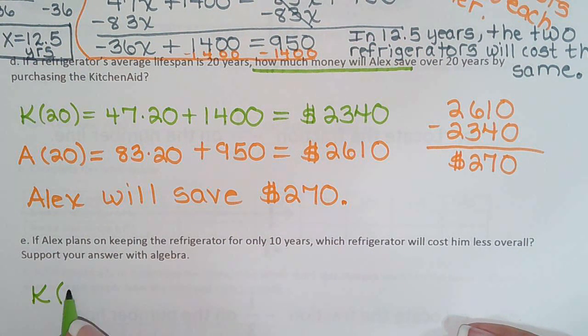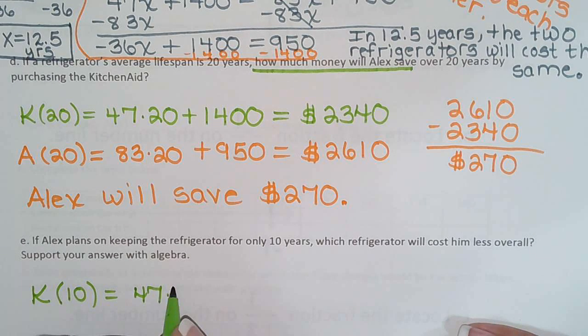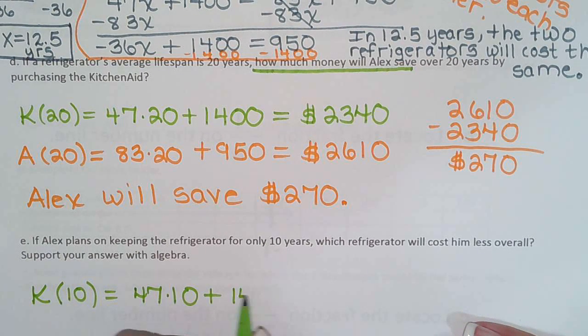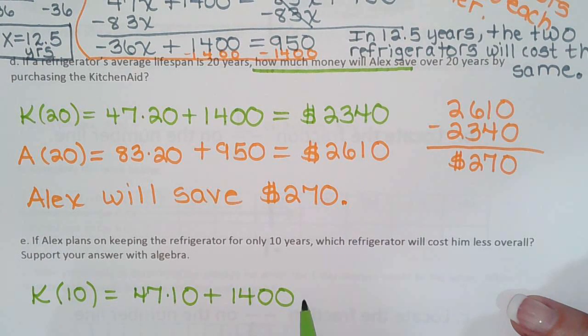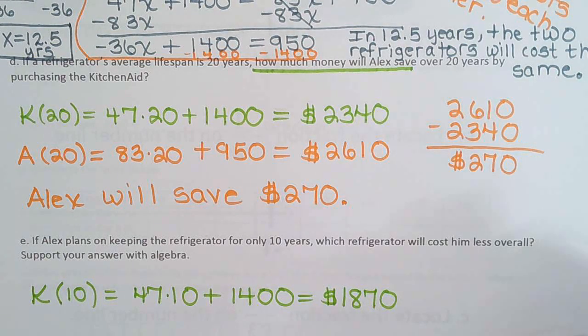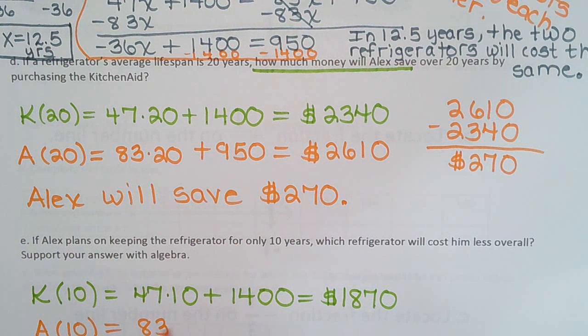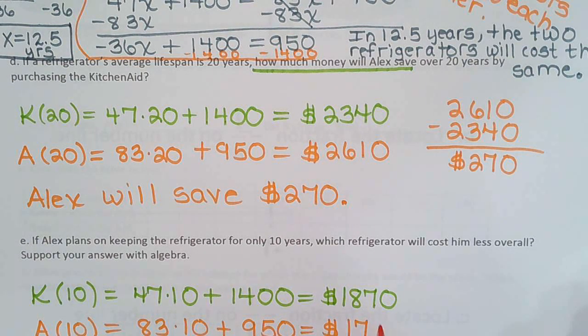So the KitchenAid after 10 years will cost 47 times 10 plus $1,400. I think we can do that in our head, can't we? $470. So wouldn't that be $1,870? I'll verify with the calculator. And the Amana after 10 years will cost 83 times 10 plus $950. So $830 and $950 is $1,780, I think. I'll check them both on the calculator.